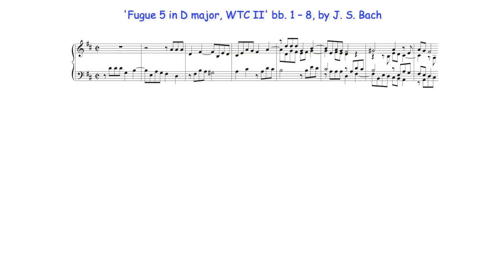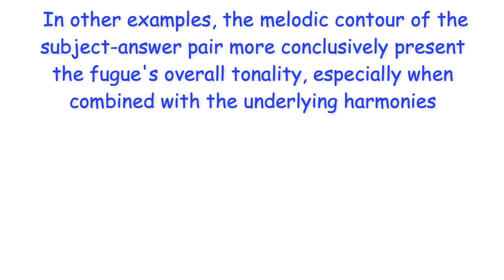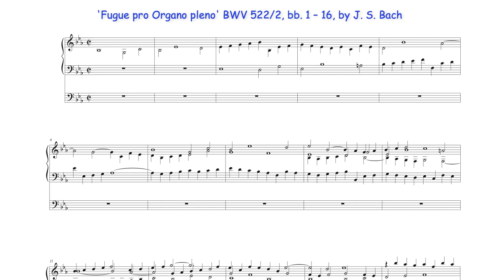As we've seen in this fugue, melodically the subject suggests G major subdominant harmony, but the underlying harmonies still essentially move between D major's tonic and dominant chords, thereby establishing that key. In other examples, the melodic contour of the subject-answer pair more conclusively presents the fugue's overall tonality, especially when combined with the underlying harmonies. In this real subject, only tonic and dominant harmony is used to frame the subject-answer pair. Here, although a secondary dominant is used to precede E-flat major's dominant, no modulation occurs, and the tonic key is maintained for the entire exposition.